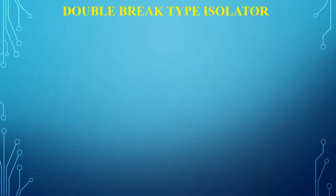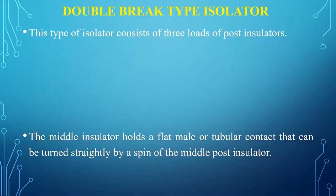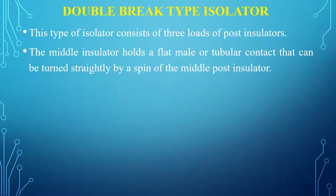Now we are going to learn about the double break type isolator. This type of isolator consists of three post insulators. The middle insulator holds the flat male or tubular contact, which can be turned slightly by a pin of the middle insulator.